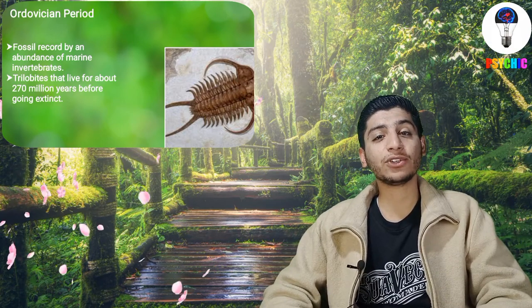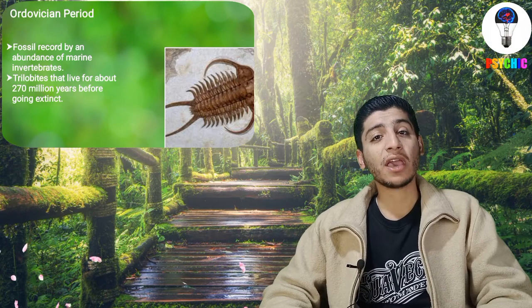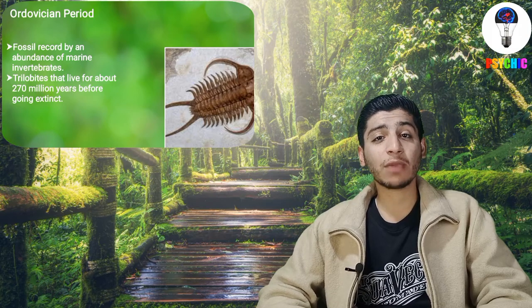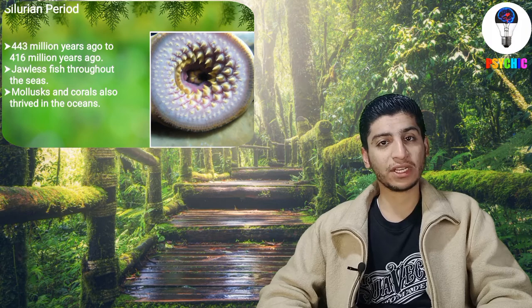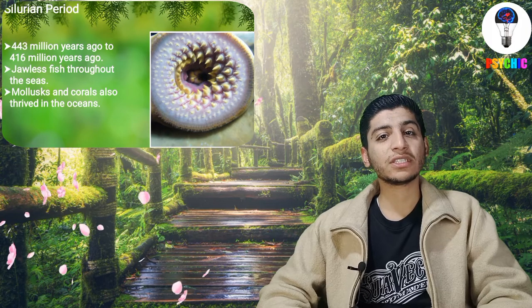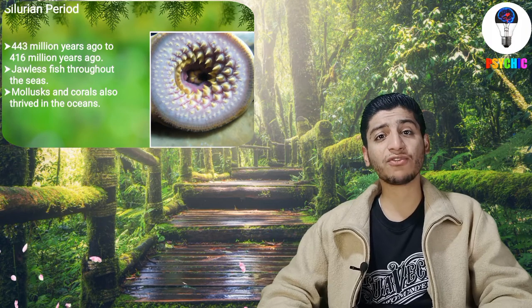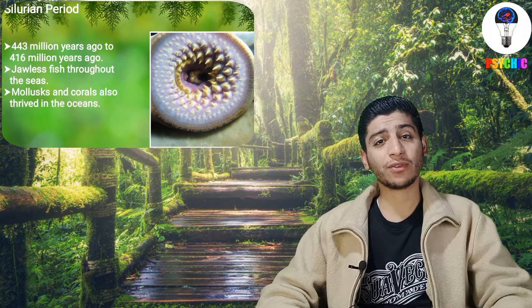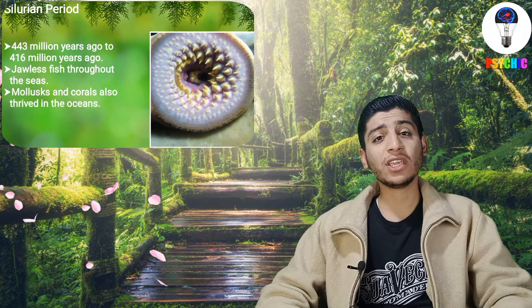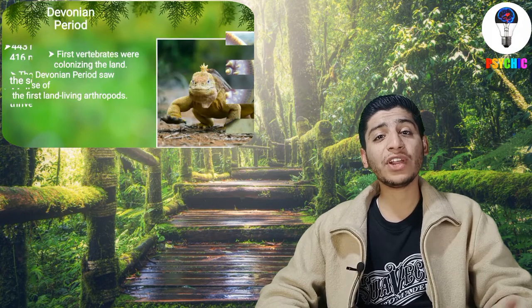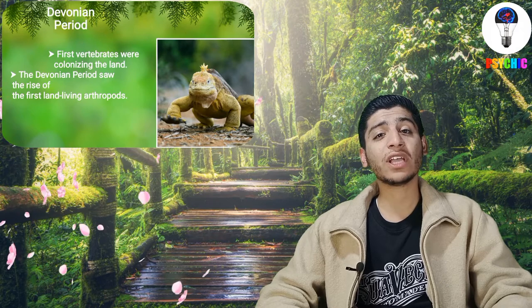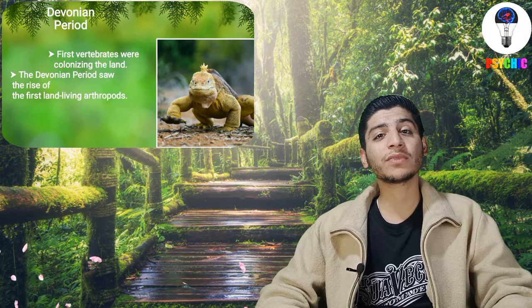The Proterozoic eon was a great blessing for life — many types of organisms came into existence, including trilobites and many other kinds of bacteria and species. After this, due to some mysterious reason, the eon ended and every living organism on earth was destroyed by that event.